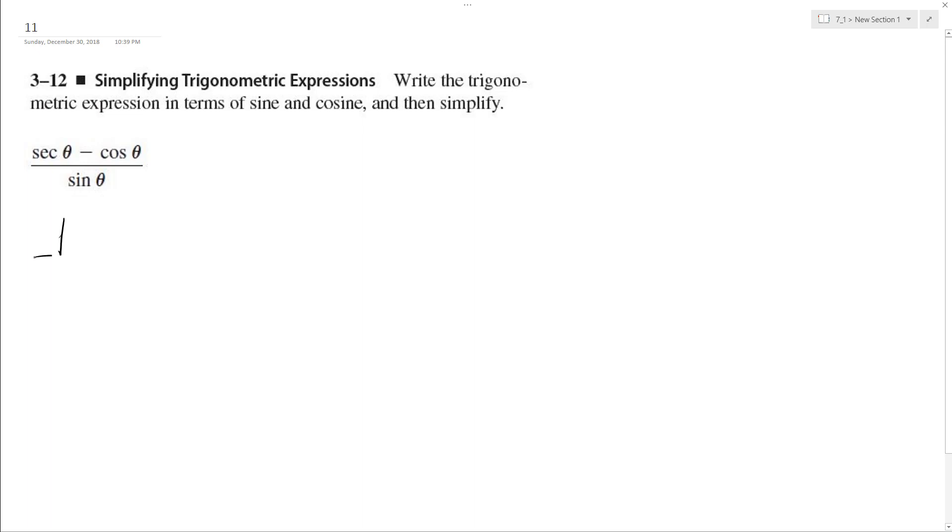So rewriting this, I can rewrite the secant as 1 over cosine theta, and then minus cosine theta. And then when I divide by sine theta, I end up with 1 over sine theta cosine theta minus cosine theta over sine theta.